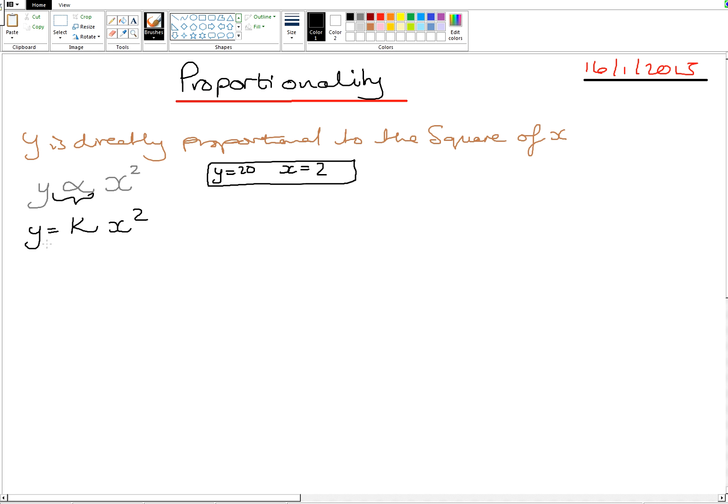So we have established what we call this before in the previous question. We call this the general rule. Now to make the general rule specific, we need to work out the value of what? The value of K. So let's use the information they gave us to work out the K value.